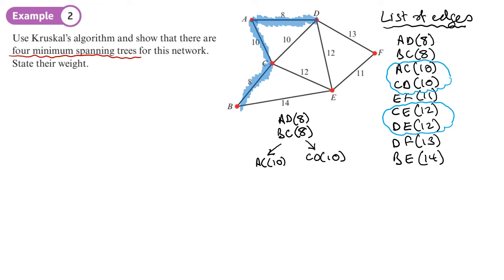No, CD would form a cycle. So we'll just put down here CD, which is 10. That would form a cycle, so we're going to skip it and then go on to the next edge, which is EF. That's fine. That's not going to form a cycle. So we'll just add on here EF, which is 11.